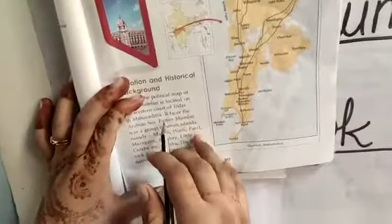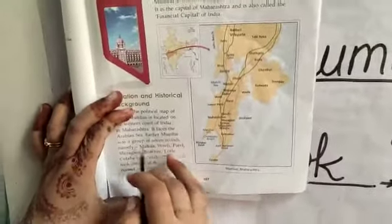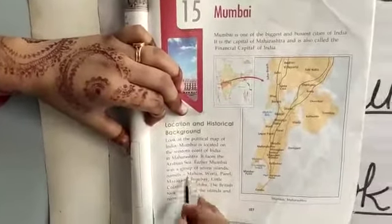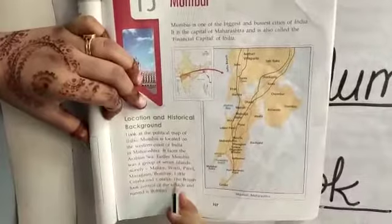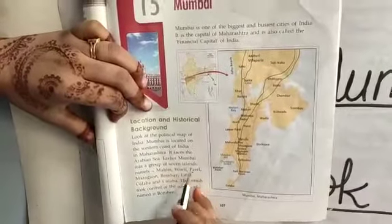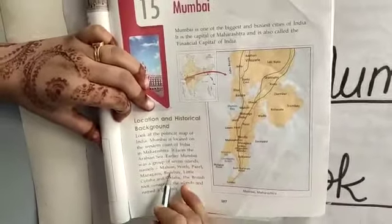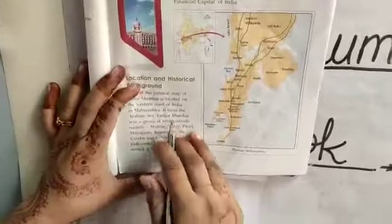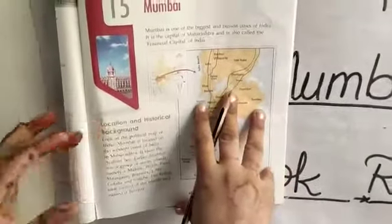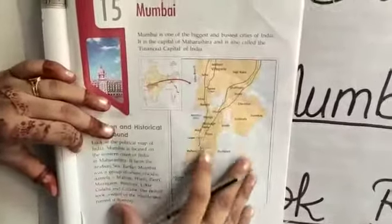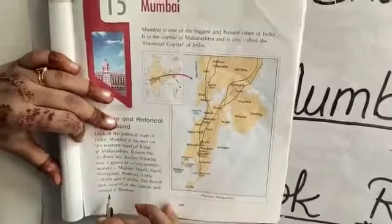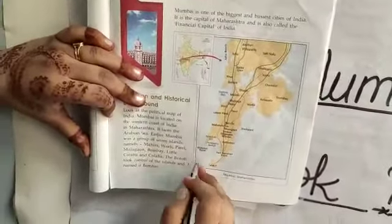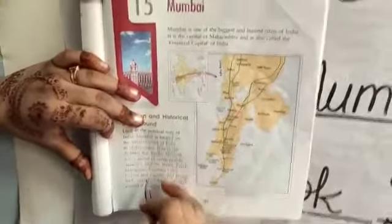Earlier, Mumbai was a group of seven islands. The seven islands were named Mahim, Burley, Parale, Mazgaon, Mumbai, Little Kulawa, and Kulawa. The British took care of these islands and named it Mumbai.